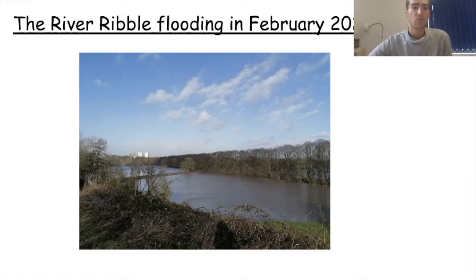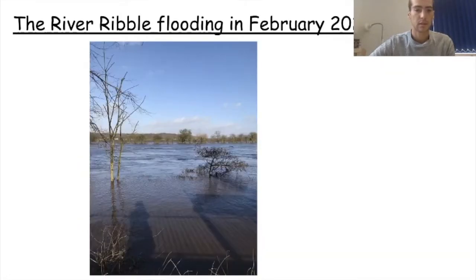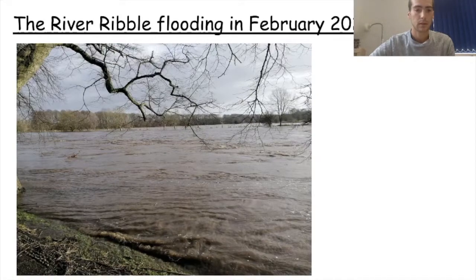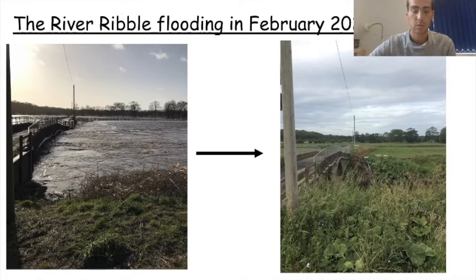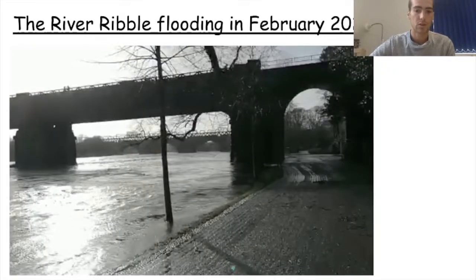The River Ribble flooded in February of this year, so I've got some images here showing some of that flooding. You can see the farmland being flooded — the river was actually under some of that water somewhere, there was just that much water. Again, you can see the water nearly making it up onto the path. A comparison: the picture on the left was taken during the flooding, and the picture on the right I took this week, so you can see just how high the water was and how close the river was to flooding that path.